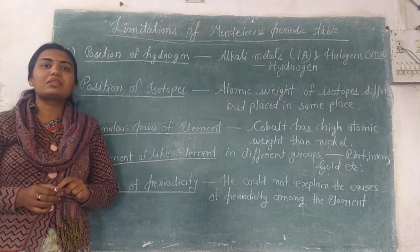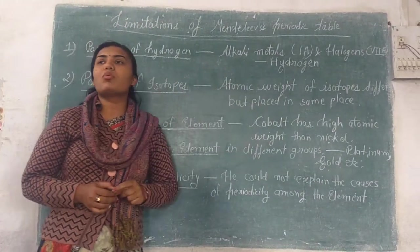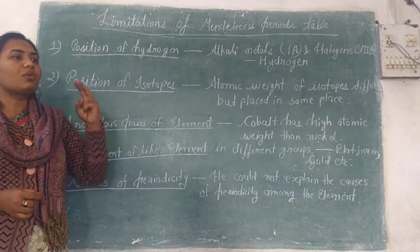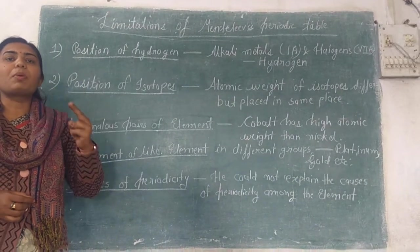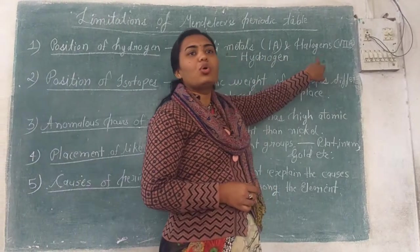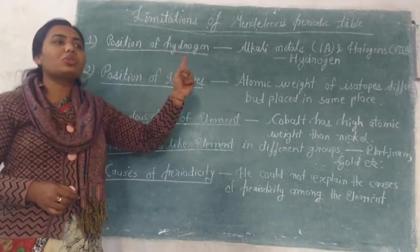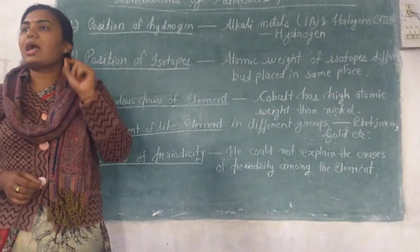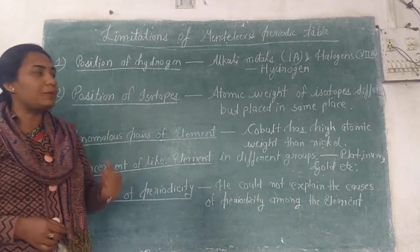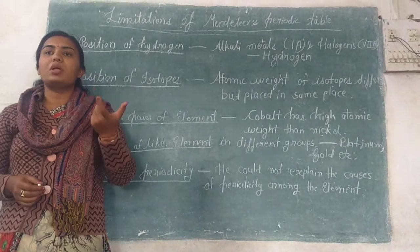Mendeleev did not give an exact position to hydrogen in his periodic table. The chemical and physical properties of hydrogen resemble two groups. Hydrogen's properties are similar to the alkali metals (group 1) and the halogens (group 7). These two groups both share similar properties with hydrogen.